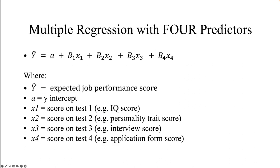Once your software produces a formula, you can plug applicant scores into it. Here we have four selection tests: an IQ score, a personality trait score, an interview score, and an application form score — four predictor scores for every applicant that made it through the selection process. This formula omits the values of the regression coefficients, so we'll need to see an actual formula next.